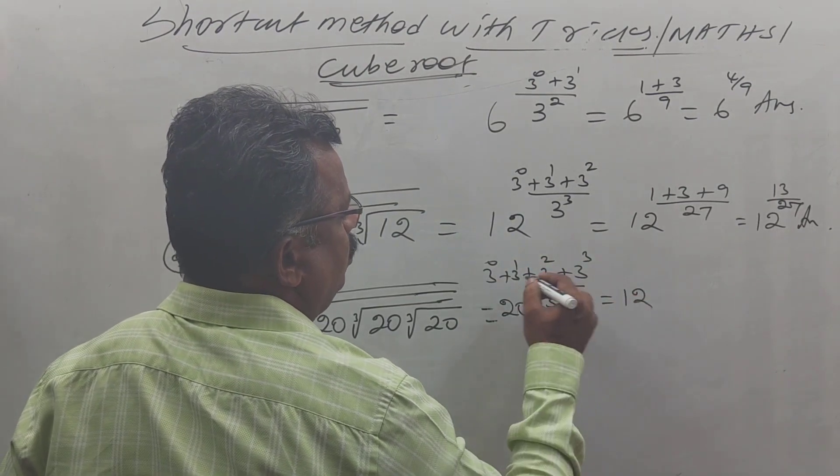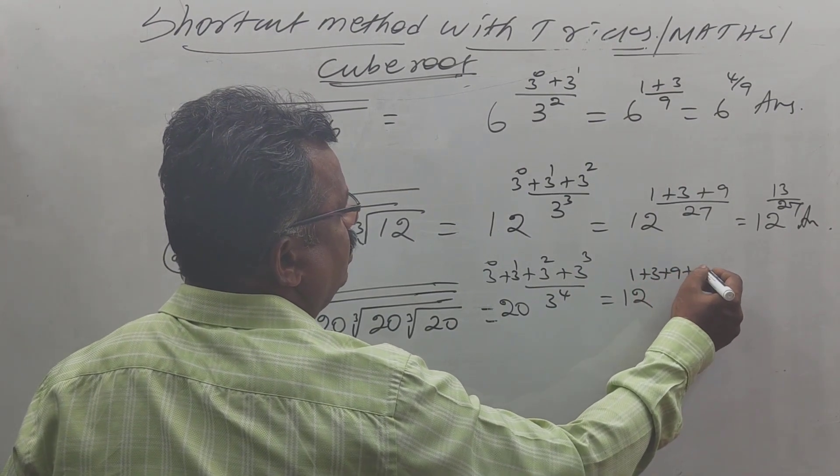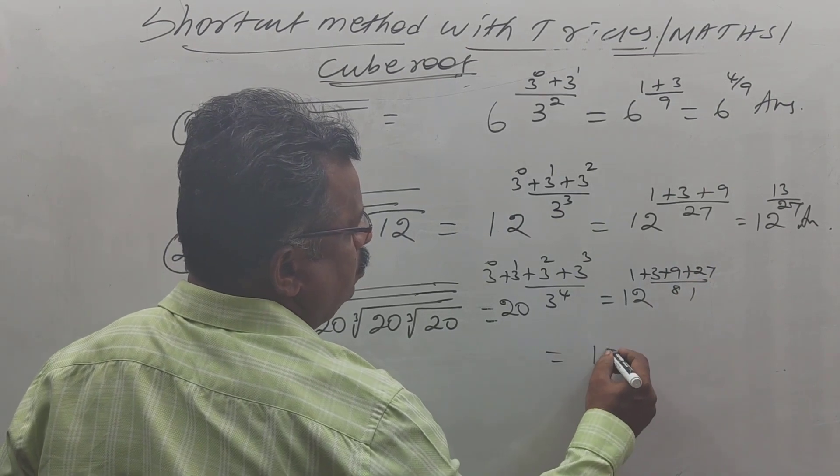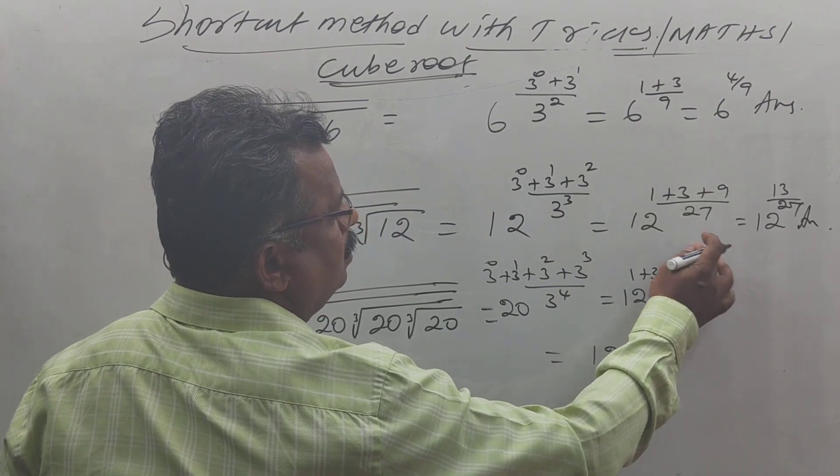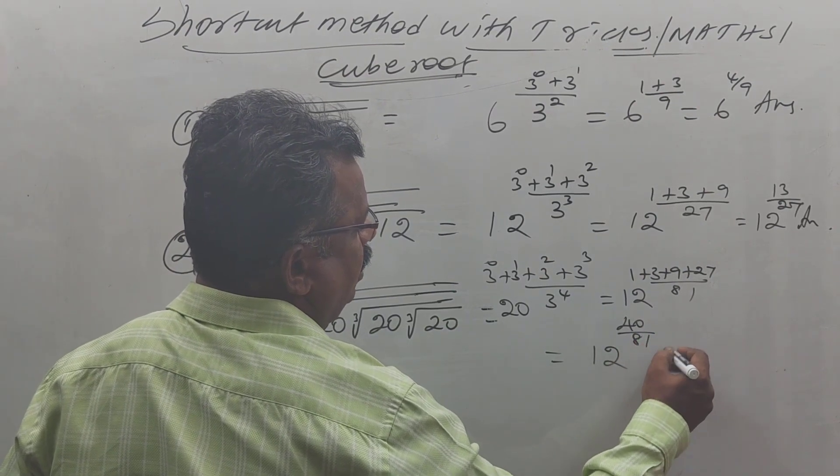So 12. 3 power 0 is 1, 3, 3 squared 9, 27 by 81. So 12 power 10, 30, 40 by 81 is the answer.